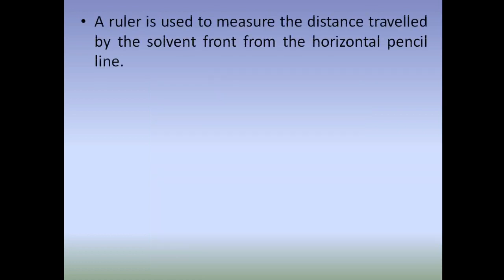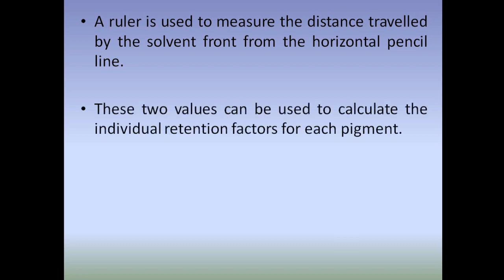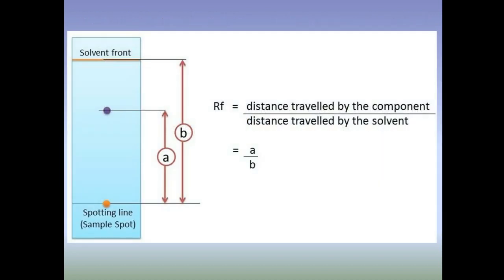A ruler is used to measure the distance traveled by the solvent front from the horizontal pencil line, which is the starting line. These two values — distance traveled by the component and distance traveled by the solvent — can be used to calculate the individual retention factor (Rf) for each pigment. Rf = distance traveled by the component ÷ distance traveled by the solvent.